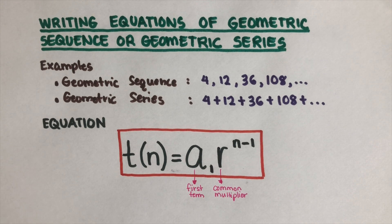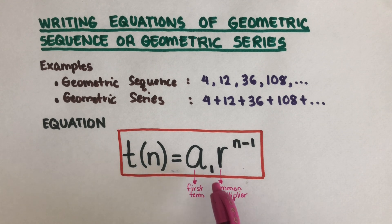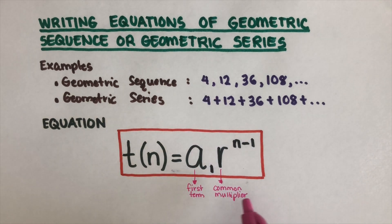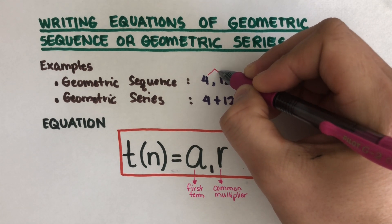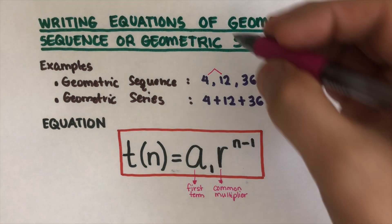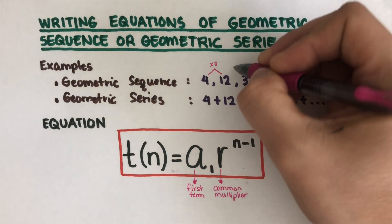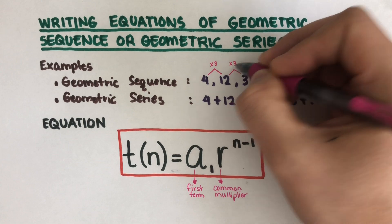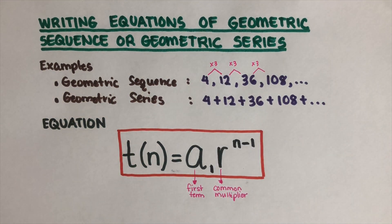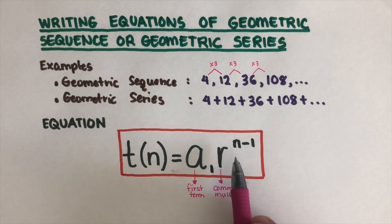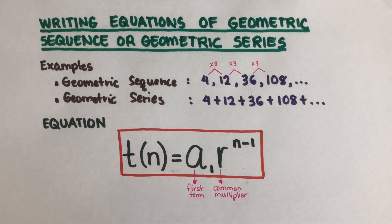This is the general equation for a geometric sequence or series: t(n) = a₁ · r^(n-1). Here, a₁ is the first term — for example, 4. The common multiplier r is the number multiplied to get from one term to the next. In this case we multiply by 3: 12 × 3 = 36, then 36 × 3, so r = 3. That exponent is n minus 1. This is geometric because we multiply.